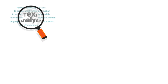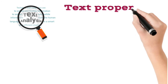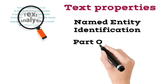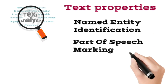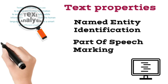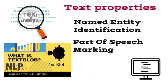Core NLP library enables the extraction of all sorts of text properties such as named entity identification and part of speech marking with only a few lines of code. Just as we saw our second library, TextBlob, we could use our text processing libraries.